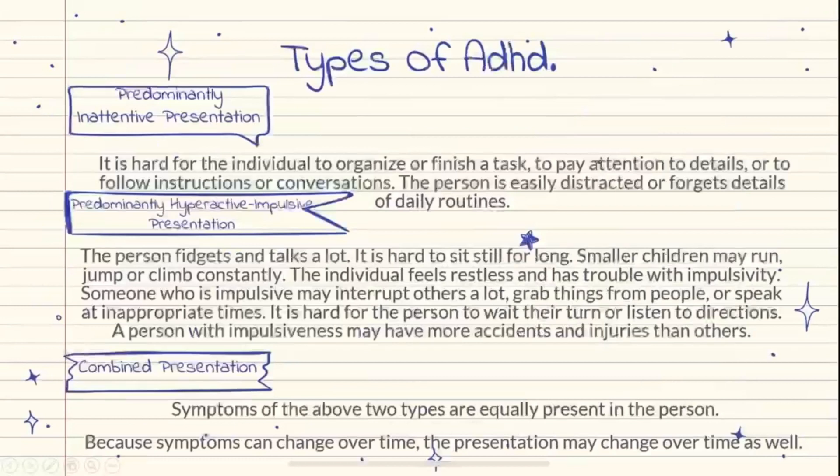There are actually 3 types of ADHD: predominantly inattentive presentation, predominantly hyperactive-impulsive presentation, and combined presentation.